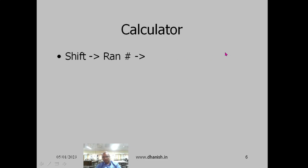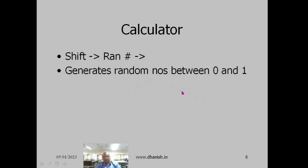On your calculator to generate random numbers, in the old FX82 the procedure is: shift, ran, hash, and a random number will appear. In newer versions, please see your manual. You can generate random numbers between 0 and 1, or integral numbers from 0 to a large number — both options are available, so choose the settings appropriately.